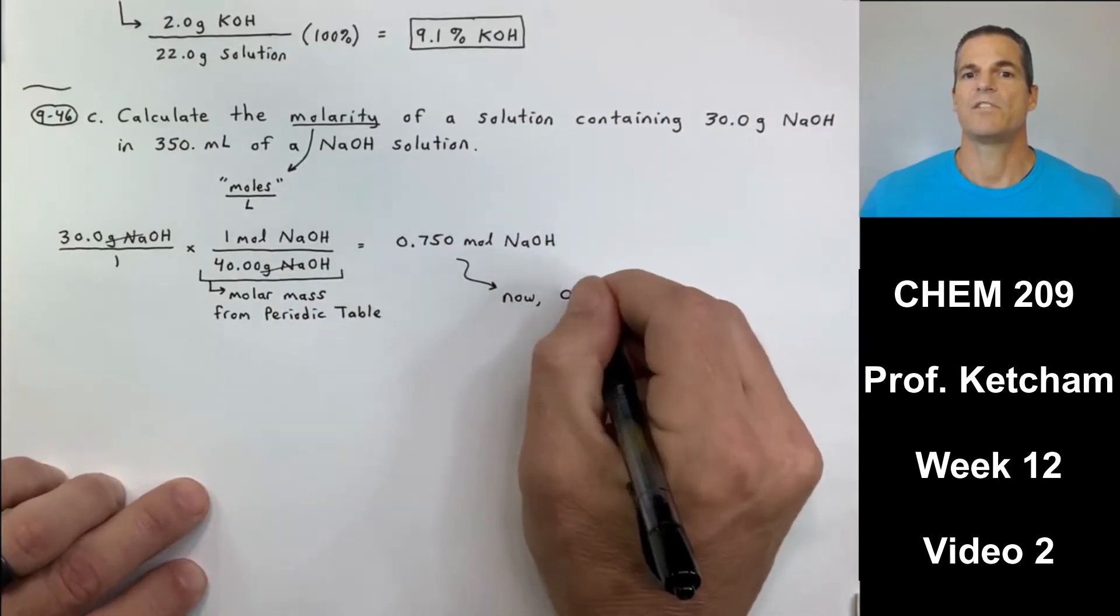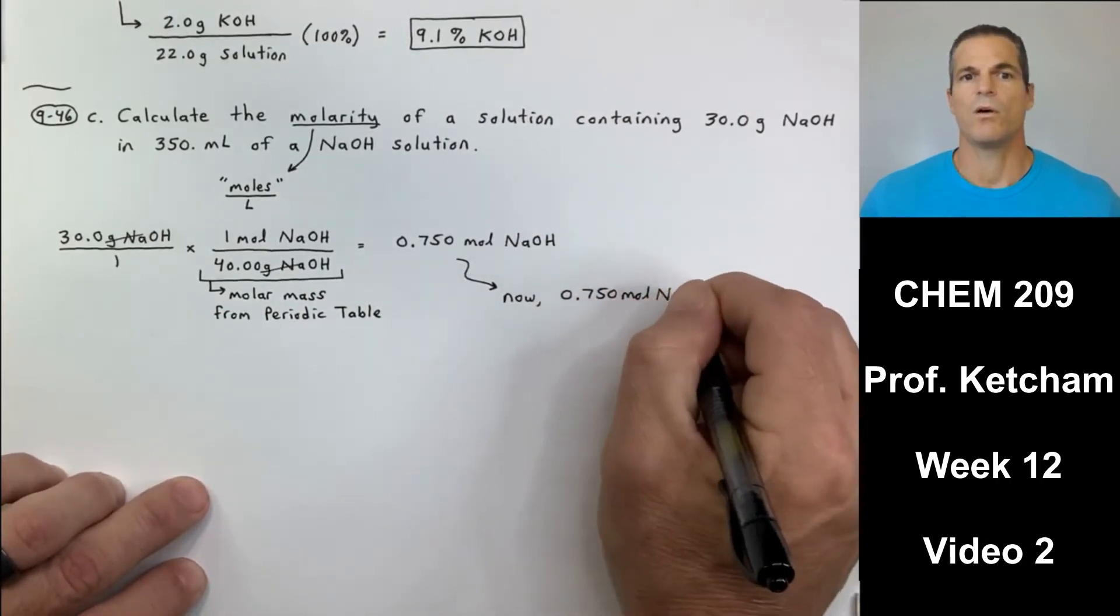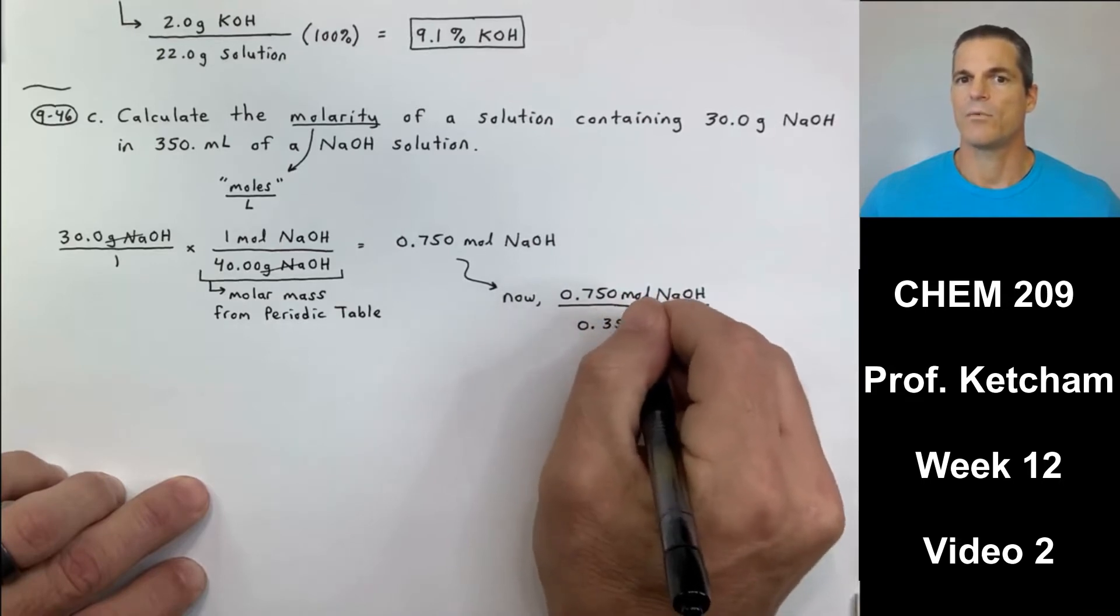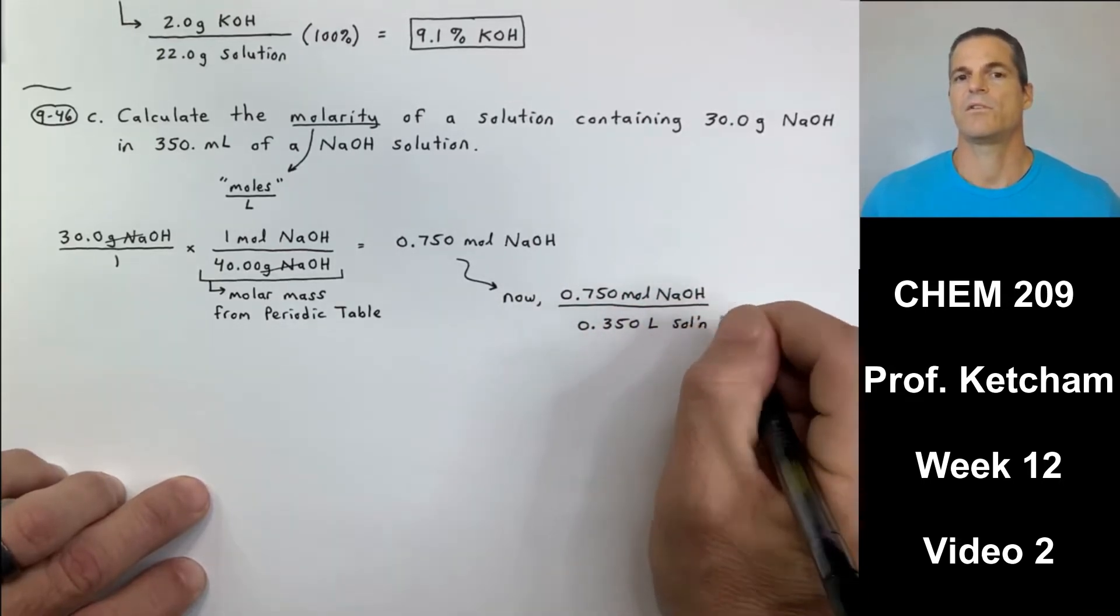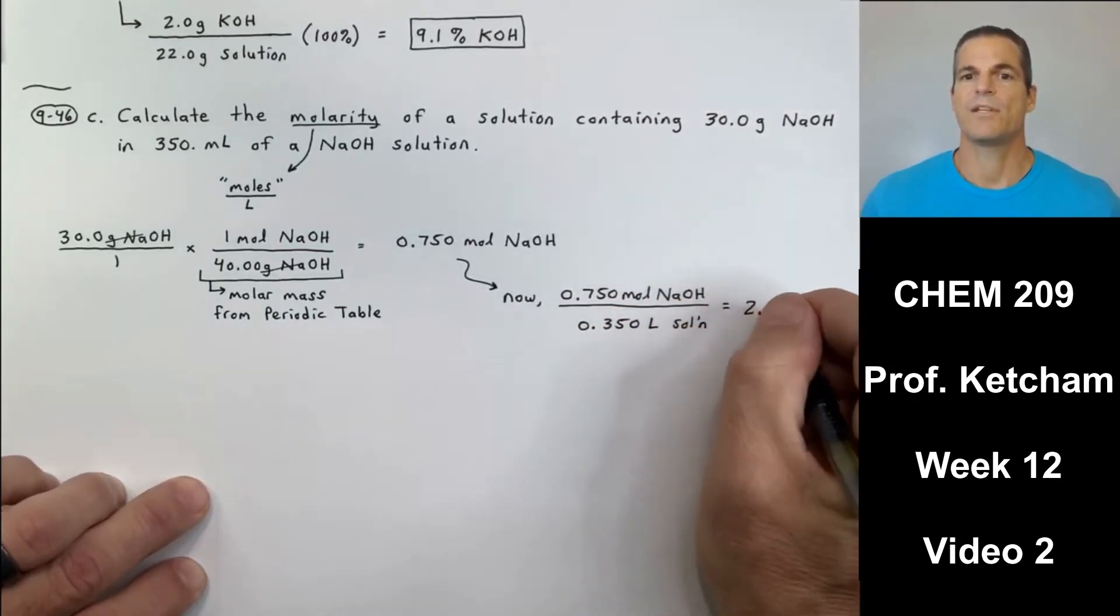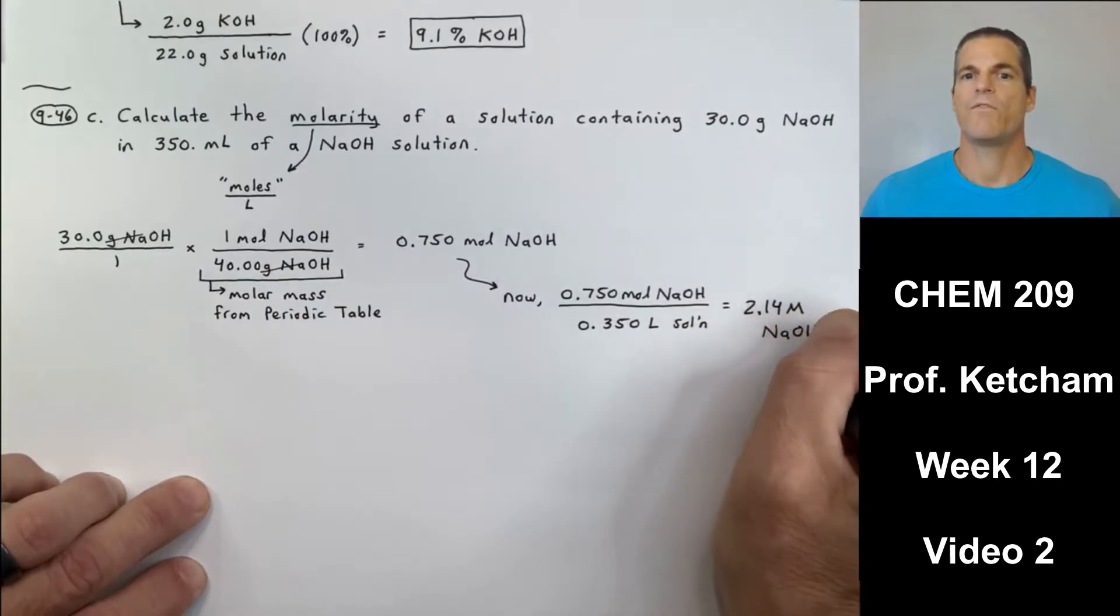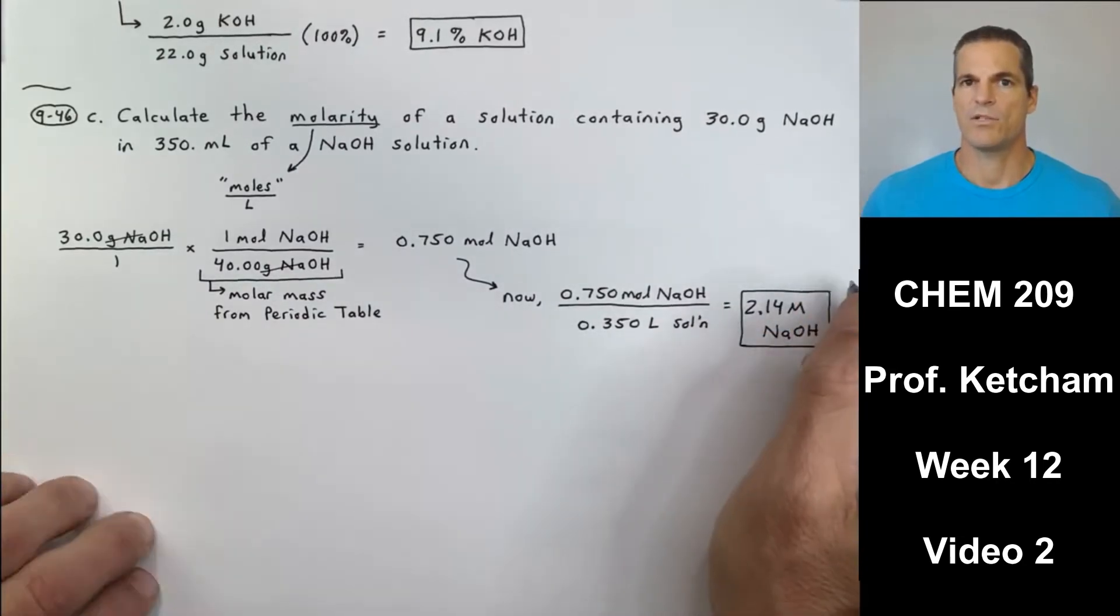So 0.750 moles of NaOH all over, not milliliters, but 0.350 liters of solution. If I do the math, three sig figs, 2.14 molar NaOH.